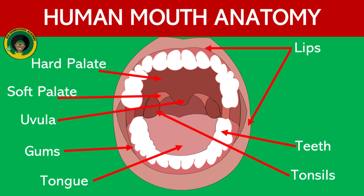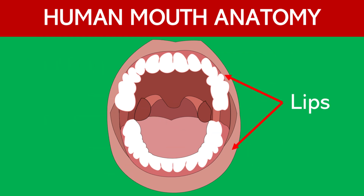Now that we have a better understanding of the zones or sections of the mouth, let's learn a bit more about the individual parts of the mouth. Lips. The lips help to seal the mouth and are essential for speech, facial expressions, and eating.